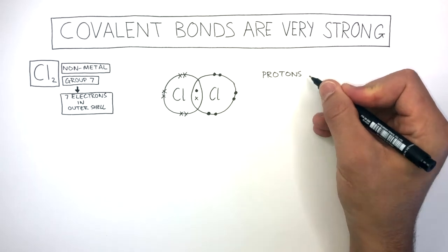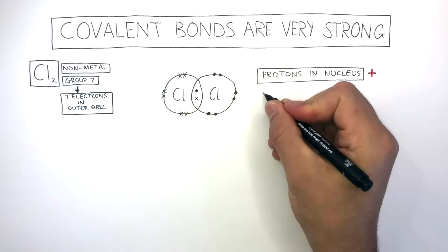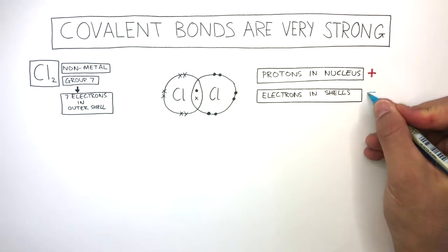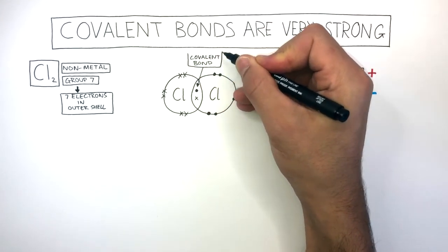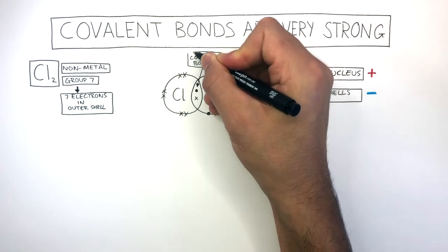The protons in the nucleus are positive, and the electrons in the shells are negative. This is the covalent bond, which is a shared pair of electrons between two non-metal atoms.